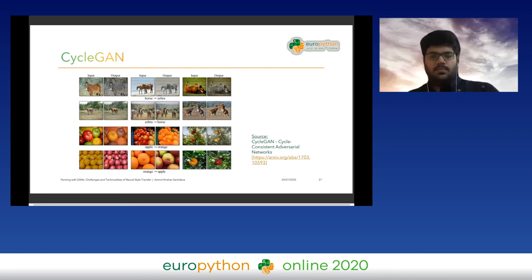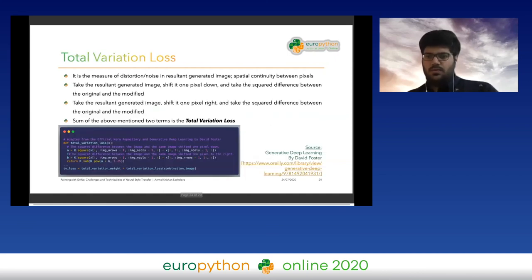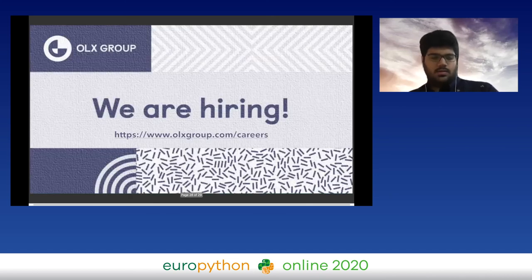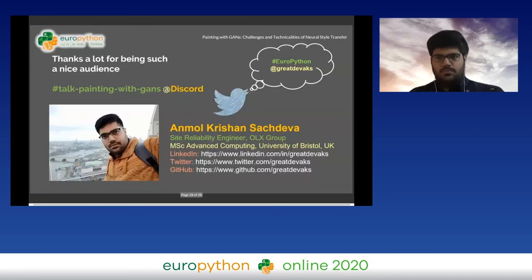These are the three popular networks for creating stylistic artifacts, with links provided. For resources, I consulted David Foster's 'Generative Deep Learning' and Jacob's 'GANs in Action.' That concludes the talk. We are also hiring at OLX Group — feel free to reach out or apply via the careers section. Follow me on Twitter and LinkedIn, and questions can be answered in the Discord channel. Thanks a lot for listening.